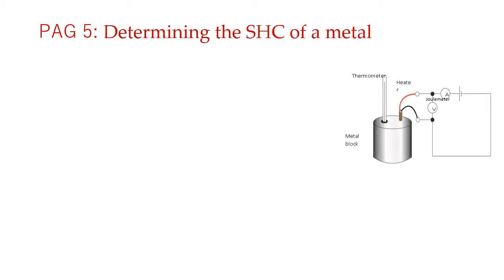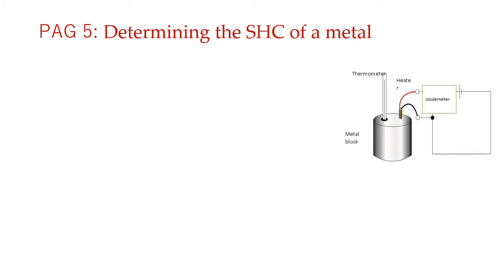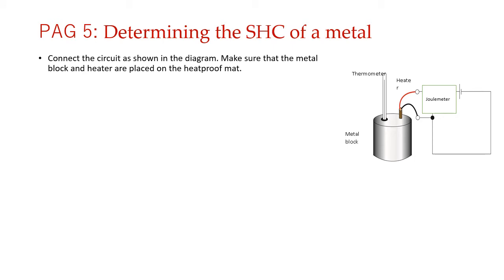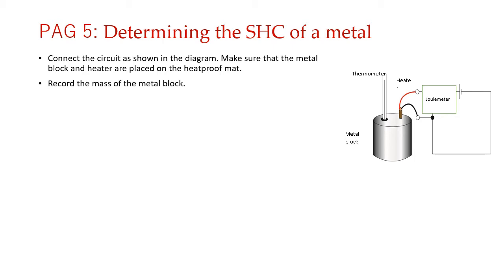Moving on to PAG 5, the specific heat capacity PAG. We are finding the specific heat capacity of a metal block. Since it involves heat, we need a heat-proof mat. Before starting, consider the equation — it has mass in it — so the first thing you do is use a mass balance to find the mass of the metal block and record it in your table. Then do the full setup as shown on the screen and insert the thermometer.